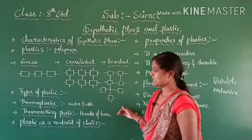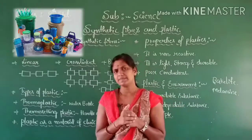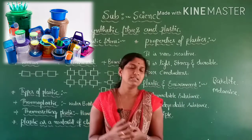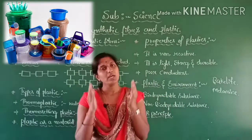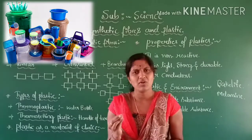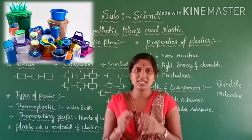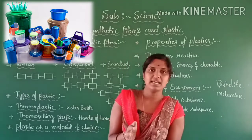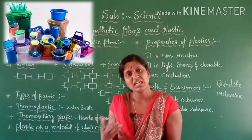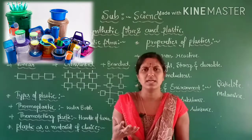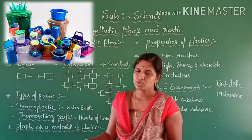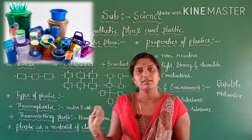Now we came to know the types of plastic. Next is plastics as a material of choice — why only plastic? In our daily life we use many kinds of plastic articles. First, plastic is cheaper than metals. For example, a plastic water bottle is easily available for 80 or 100 rupees, whereas a metal water bottle costs much more. So because of this reason, usually we pick plastic water bottles.